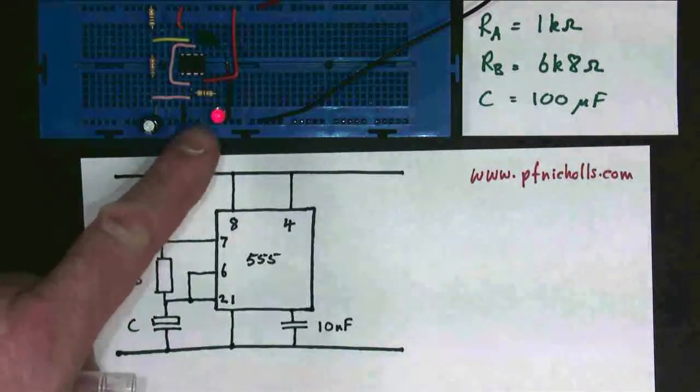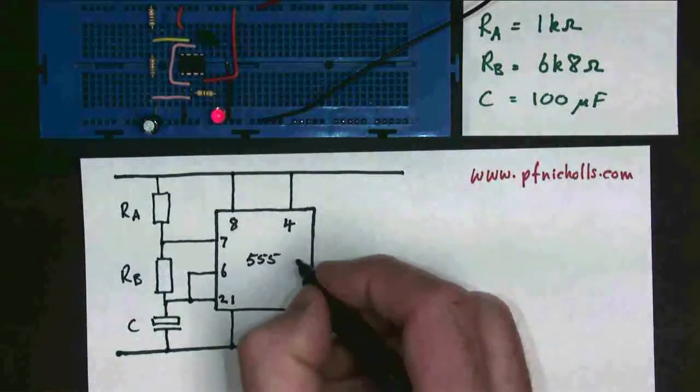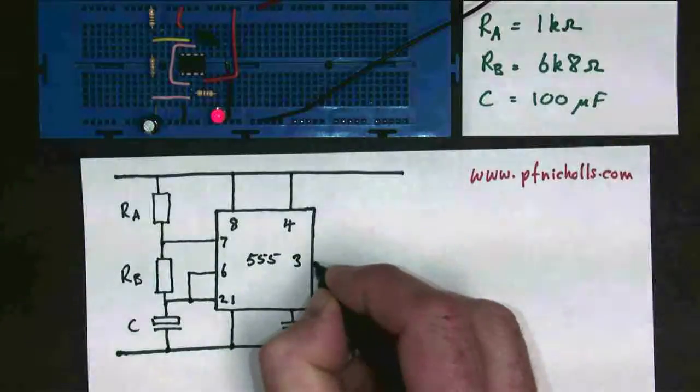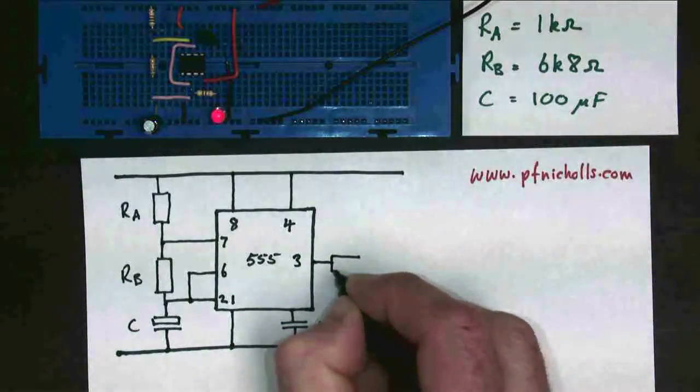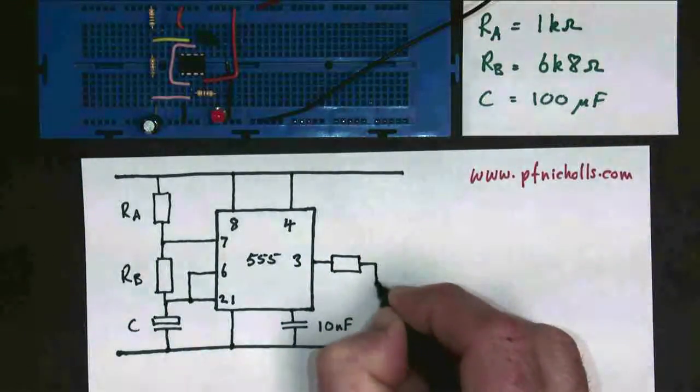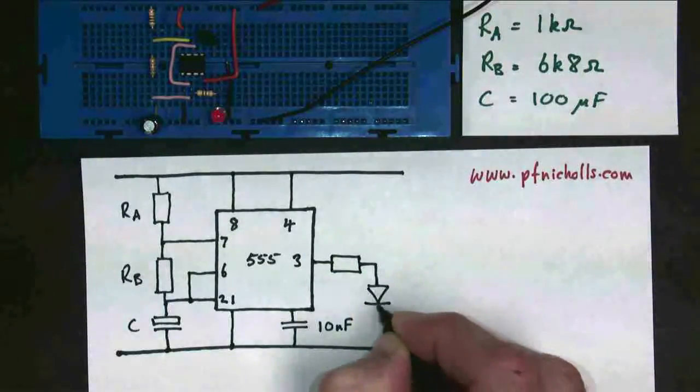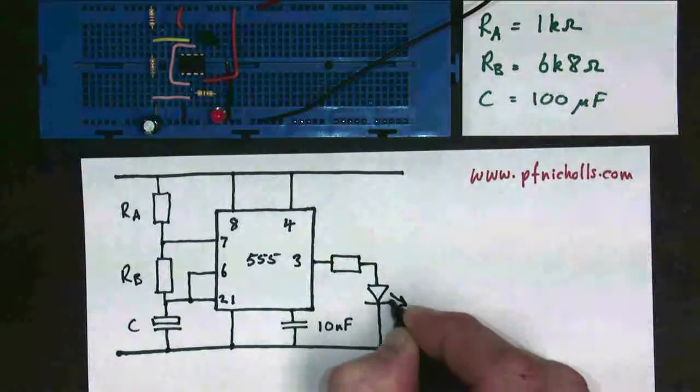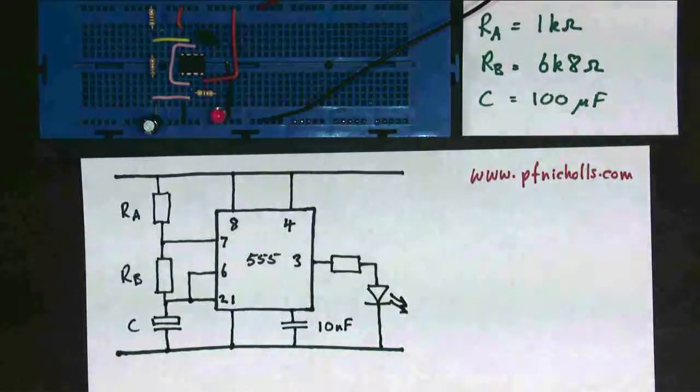You also notice we have an LED as our output. We could have any output we like, but in this case it's an LED. So I have my resistor and my LED going down to ground. And that's my 555 circuit. And you should be able to draw it just like that.